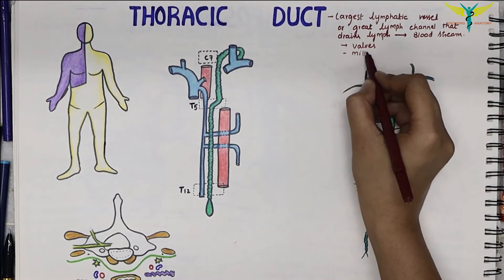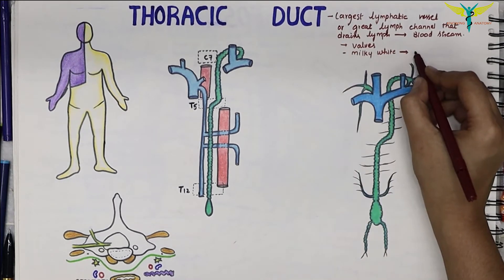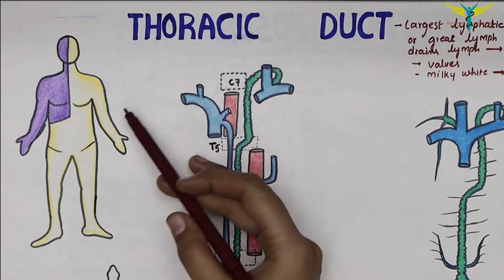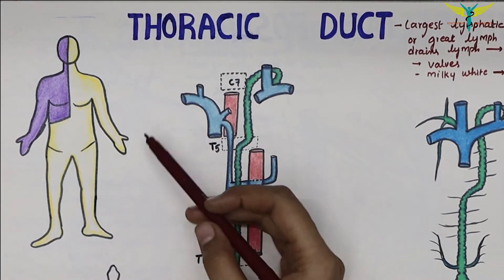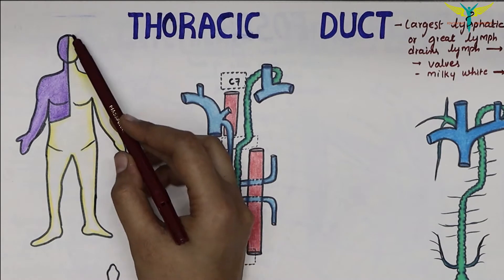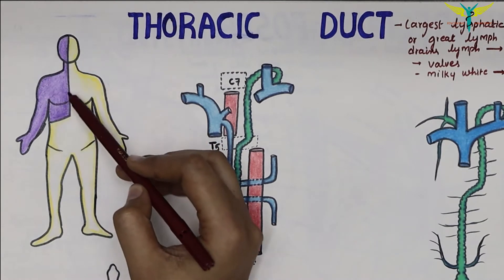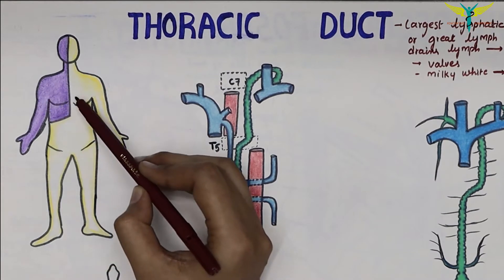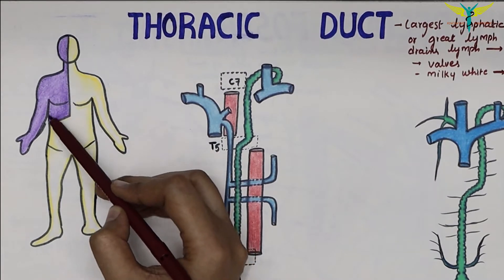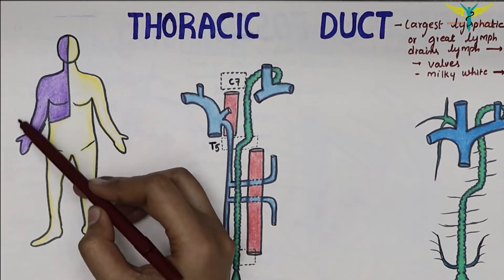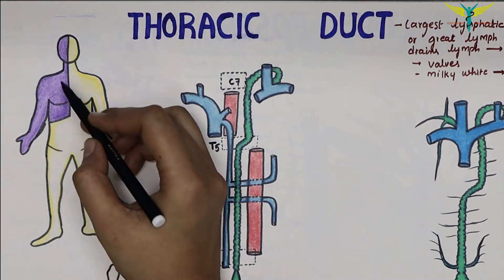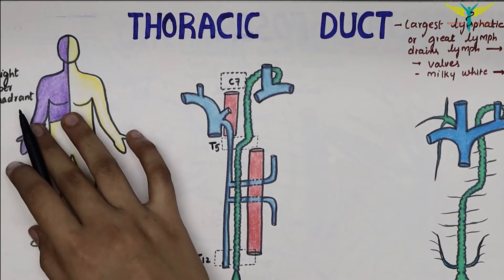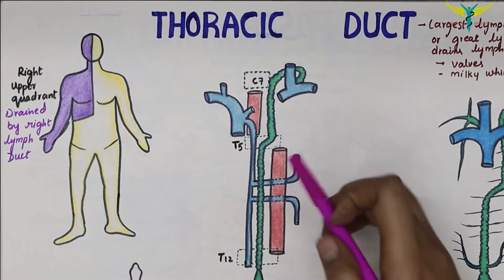The thoracic duct drains lymph from all parts of the body except the right side of the head and neck, the right side of the chest wall, the right lung, the right side of the heart, the right surface of the liver, and the right upper limb. This region is drained by the right lymphatic duct, represented by the violet color in the diagram.